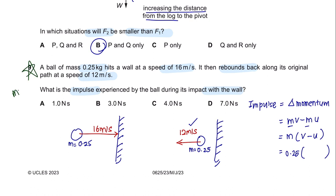This question is regarding momentum, and velocity is a vector quantity—it has direction. Since initially the ball was moving in the positive direction, the rebound is the negative direction. So for final velocity, write negative 12, minus 16, giving: 0.25 × (−12 − 16) = 0.25 × (−28) = −7 N·s. The magnitude of the impulse is 7 newton seconds.